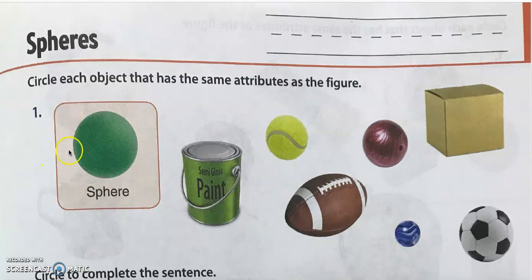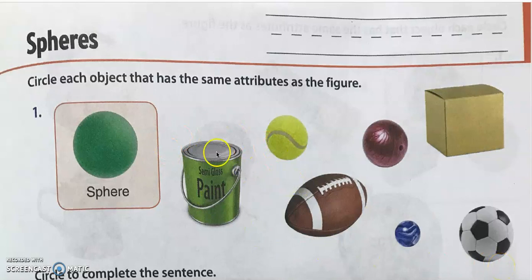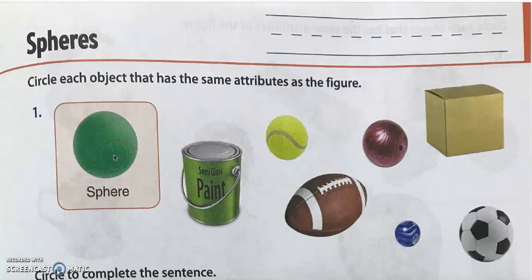Let's start talking about these questions together. We will have to circle each object that has the same attributes as the figure — same attributes meaning the same things as this figure. Which one of these objects looks like a sphere? This one — it definitely has curved surfaces, but it also has a flat surface.